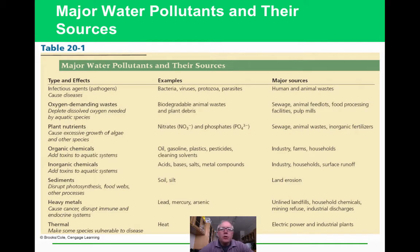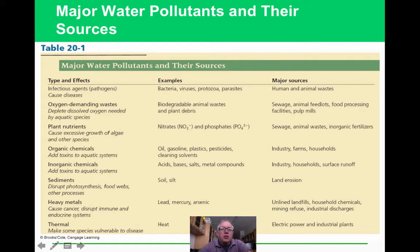This slide lists pollutants and their sources and effects — a great resource for AP free-response questions. It covers oxygen-demanding wastes, nitrates and phosphates, heavy metals, and more, with their sources and environmental effects. Pause here to review this information carefully.